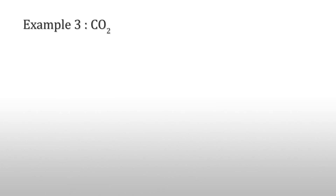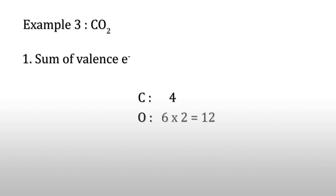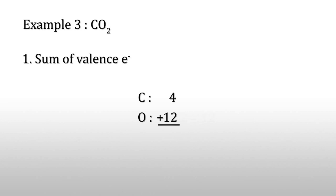Next, example three: CO2. Sum of valence electrons: carbon has four valence electrons and oxygen has six electrons. Two oxygens gives twelve electrons. Total: sixteen electrons.